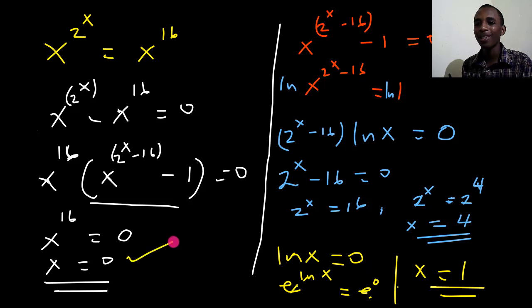Okay, so those are the three roots of x. x is 0, x is 4, and x equals 1. It's an interesting problem to consider. So thanks for watching this video.